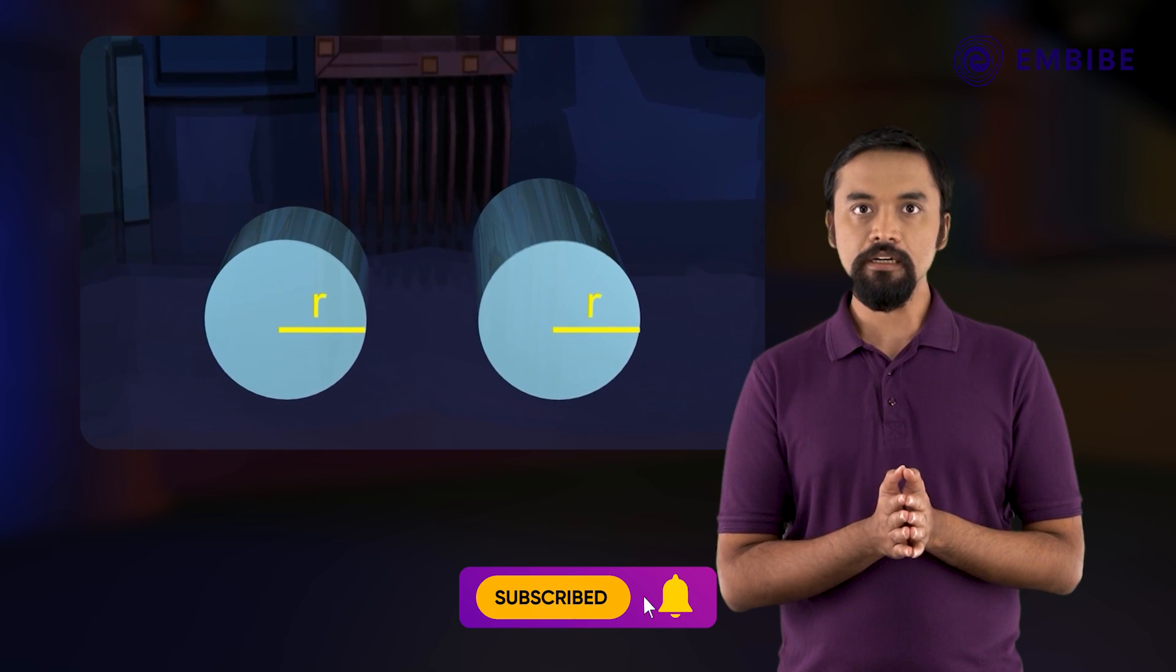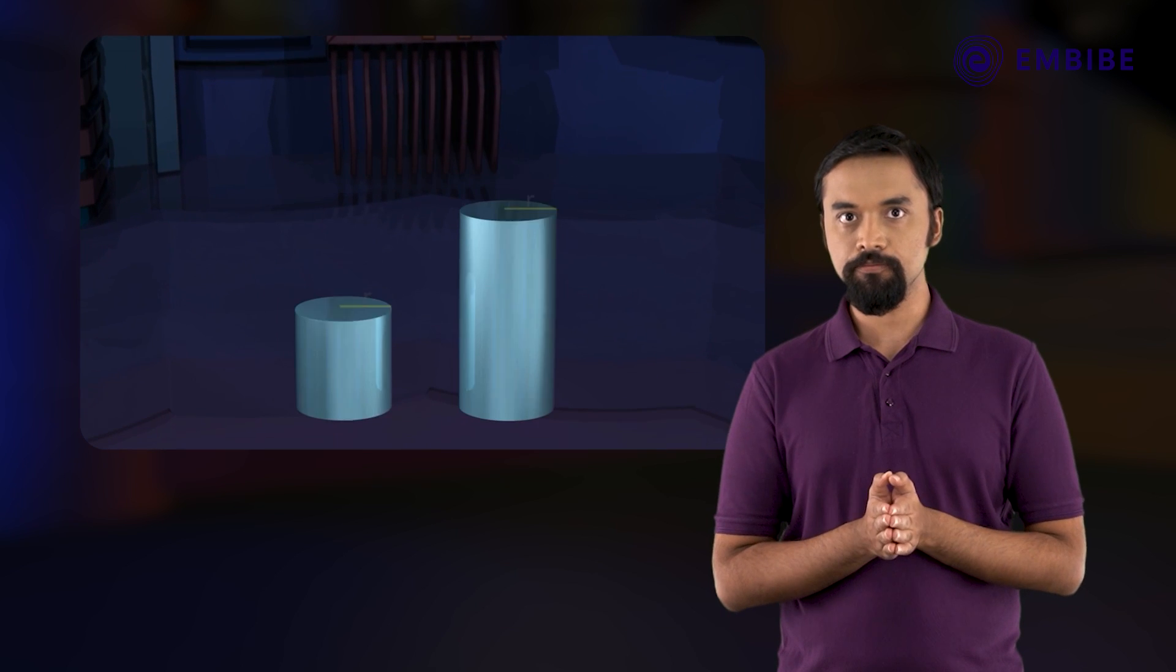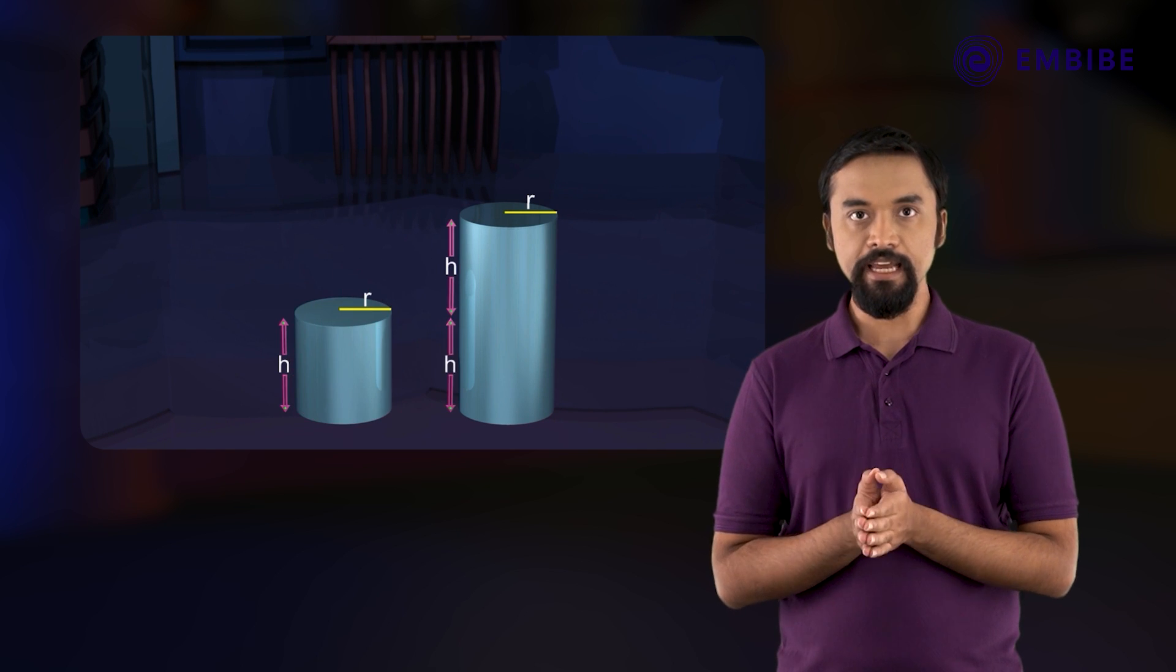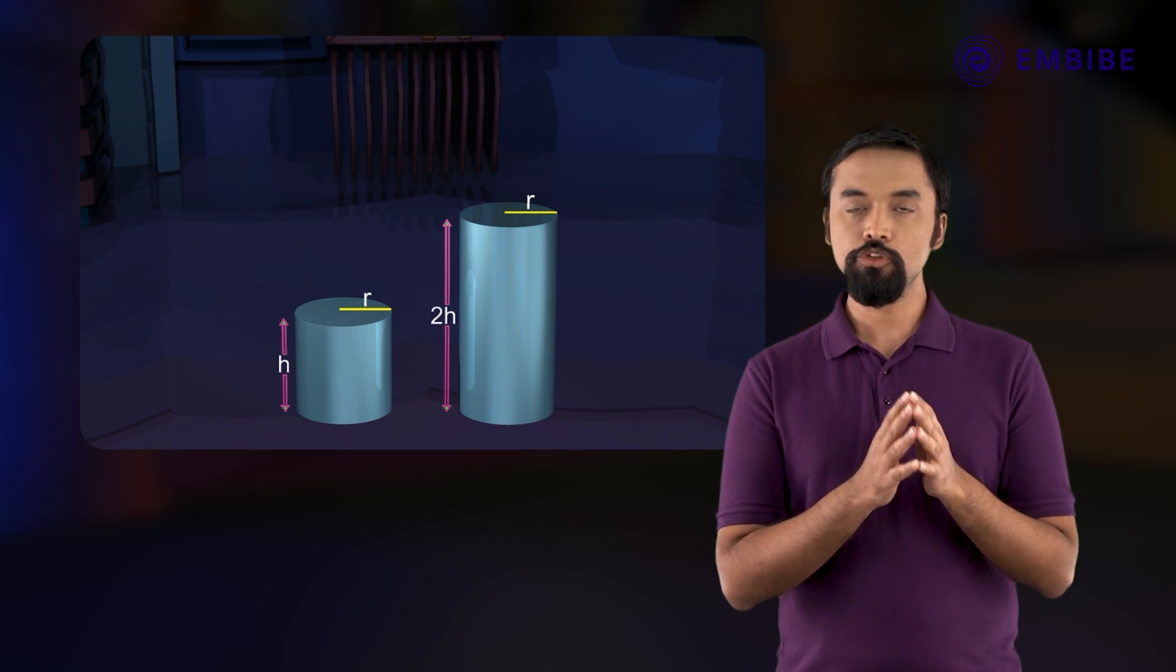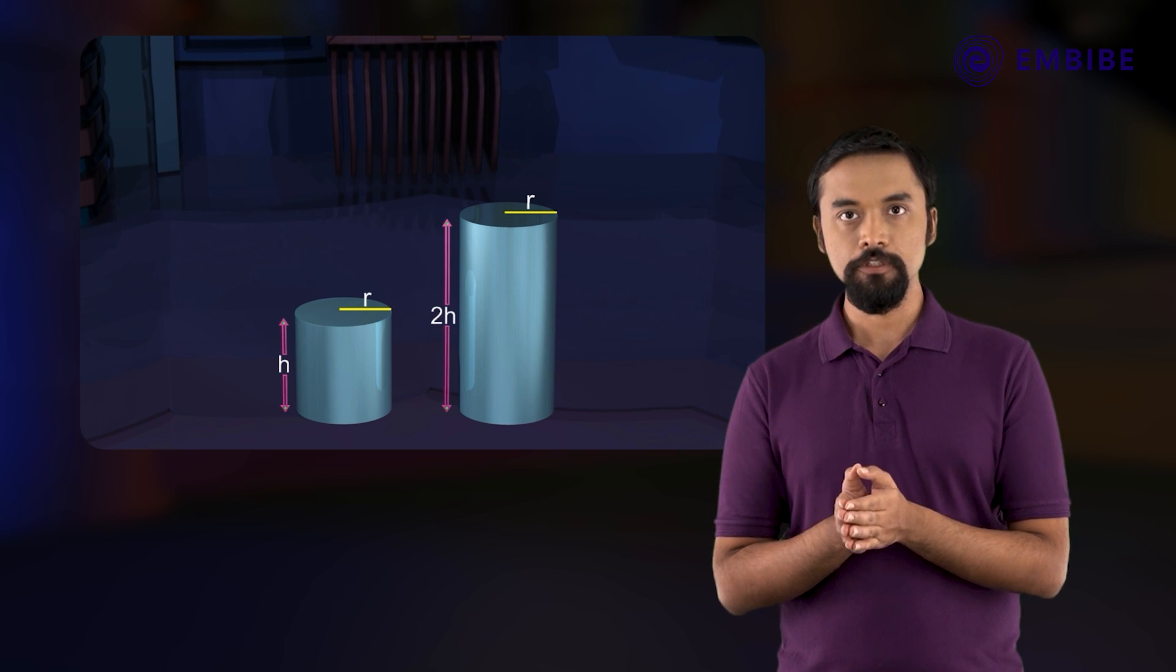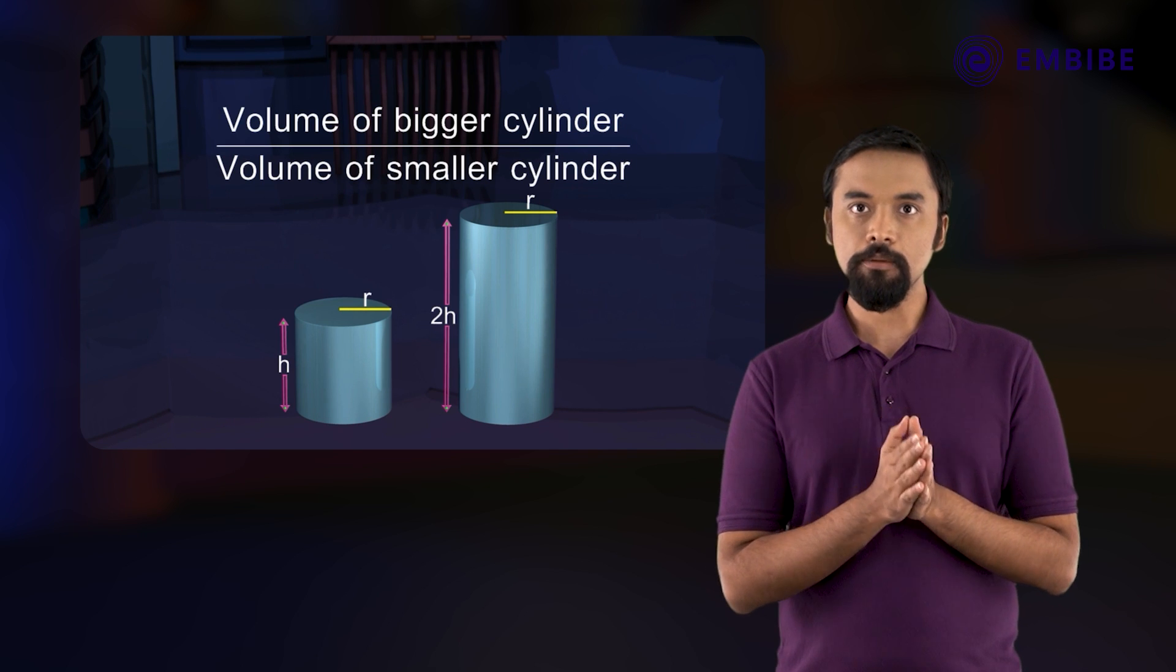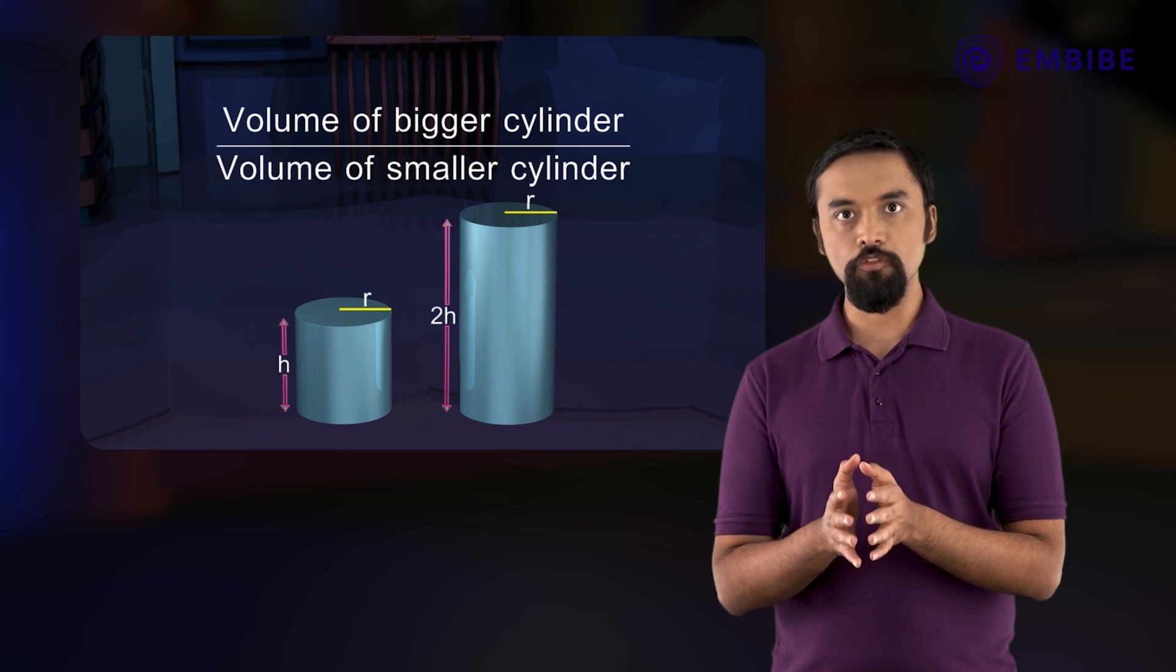Let r be the radius of the base of each cylinder. If the height of the smaller cylinder is h, then the height of the other cylinder will be 2 times h, so it will be 2h. To compare volumes means to get the ratio of the volumes.